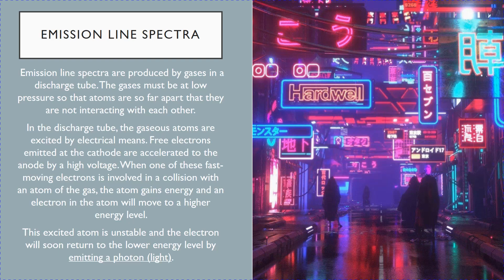It is the same principle as what you see in neon lights. The brightly colored neon lights on signposts and signboards are an example of a discharge tube. Inside this neon light, the gas is of course neon.